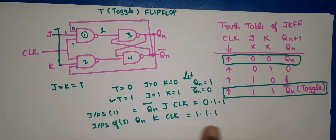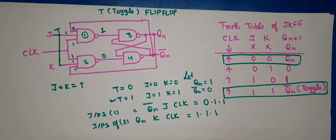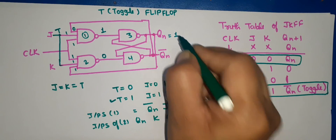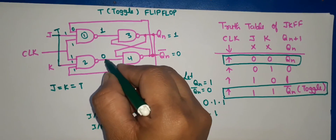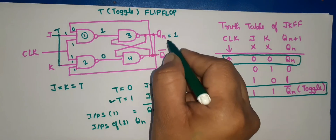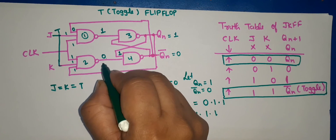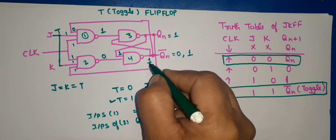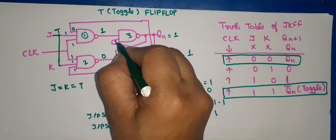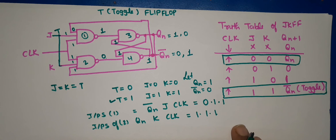For gate number 2, all inputs are 1, so the NAND gate output will be 0. For gate number 1, since one input (QN bar) is 0, the output will be 1. This 1 will be fed back, and through the feedback the output toggles. So our output is toggled and our condition is confirmed.